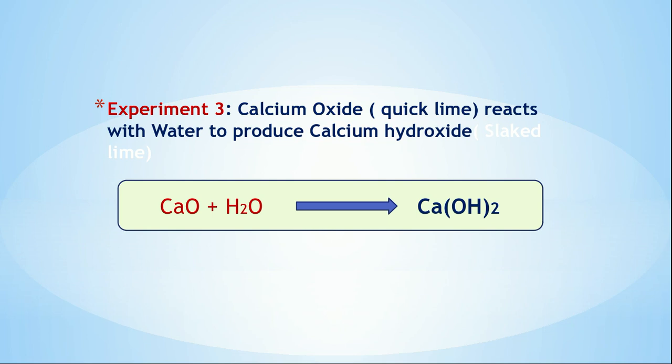Now let us see another example: calcium oxide (quicklime) reacts with water to produce calcium hydroxide. The molecular formula of calcium oxide is CaO and of water is H₂O. These two react to produce Ca(OH)₂, that is calcium hydroxide.